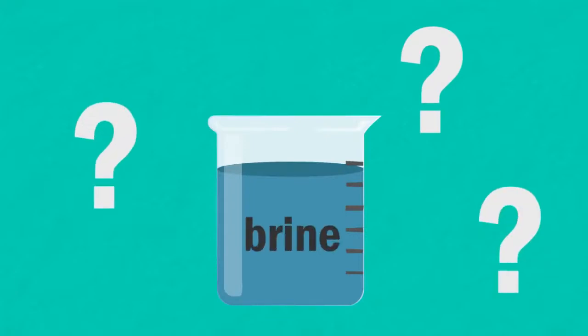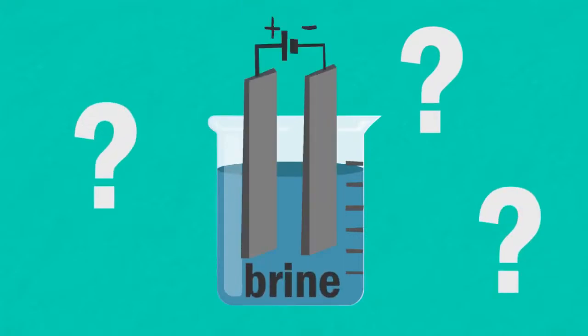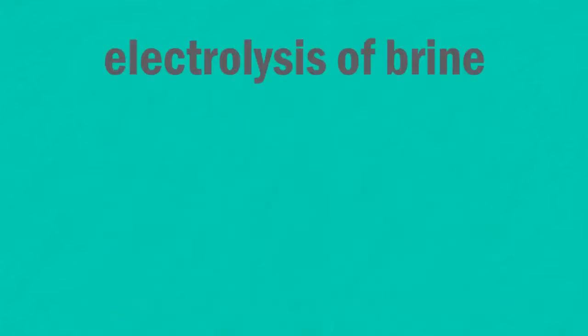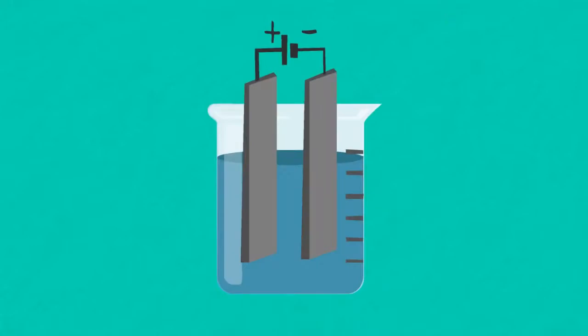This lesson looks at what happens when brine undergoes electrolysis. You may need to look at our lesson what happens in electrolysis before going any further. The electrolysis of brine is an industrial process which is carried out on a large scale, but we can look at the process on a smaller scale in the laboratory.